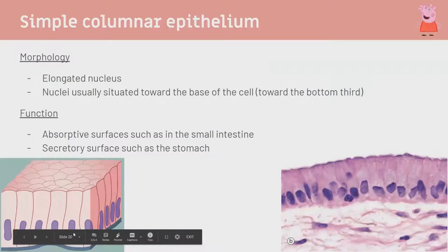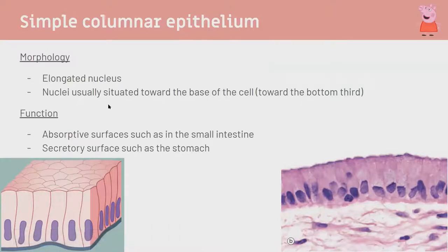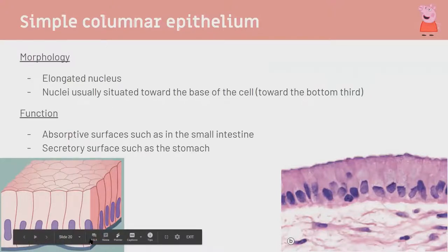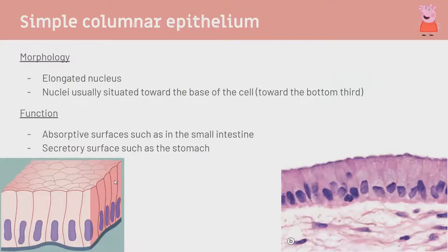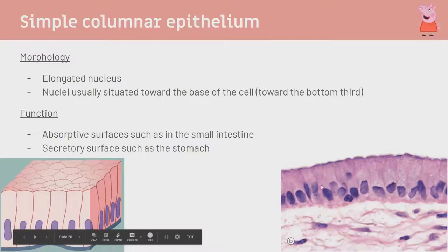Simple columnar epithelium has an elongated nucleus typically situated in the bottom third of the cell. It has absorptive and secretory functions. The difference between columnar and cuboidal is somewhat arbitrary - columnar is essentially a narrower, longer cuboidal. In the stomach, the larger cell provides some protection as it's harder for toxins to penetrate, though bicarbonate and mucus do most of the protecting.